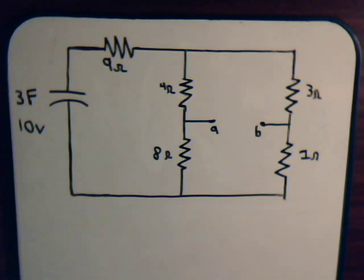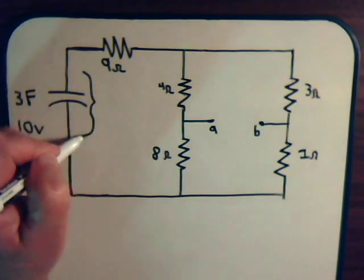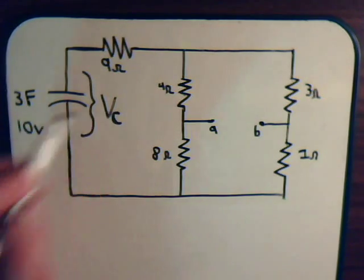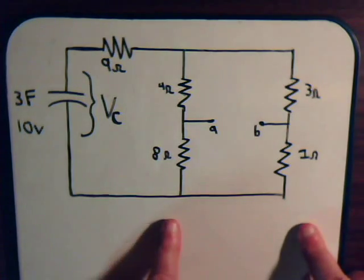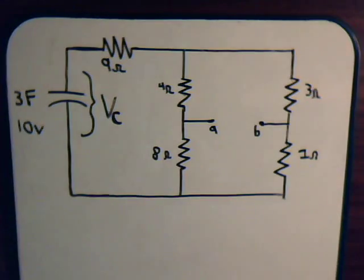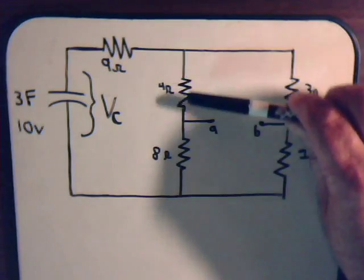We know that in the last video we derived a formula for the voltage of a discharging capacitor. For the moment, let's just say that the voltage drop here we'll call Vc. Let's look at how this circuit is set up. Here is 9 ohms, and then we have these other resistors. We see that the 4 and the 8 are in series, as are the 3 and the 1.